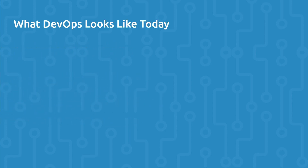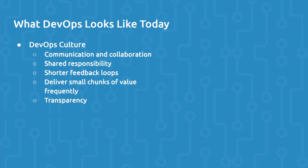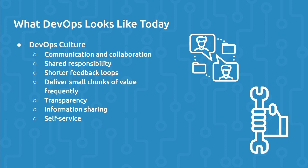Now that we have more historical context on what led to the DevOps model, let's walk through the DevOps practices that exist today. First, let's discuss the culture of DevOps. The DevOps model is about communication and collaboration, shared responsibility of the software development lifecycle, shorter feedback loops and delivering small chunks of value frequently, transparency around business processes, information sharing, self-service, and cross-functional teams.